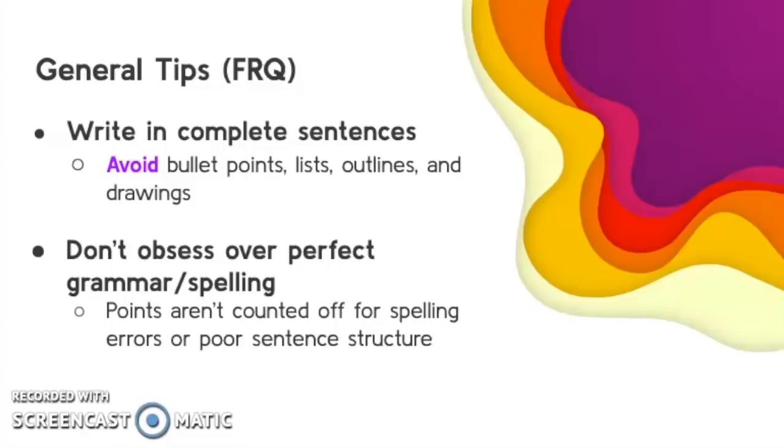Points aren't deducted from your essay score. If you have an incorrect statement, you just don't receive points for that unless you contradict yourself. So if you state something correctly but then later state the opposite, you won't earn a point. Format your order so it goes along with the points that you're supposed to answer in the FRQ prompt.